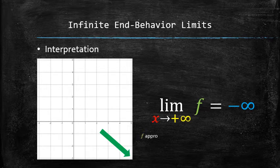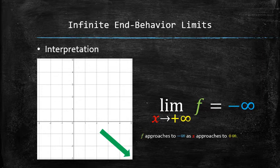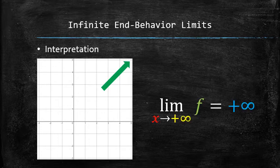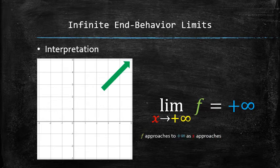For instance, this is what one would imagine when seeing the following limit statement. It shows that f approaches negative infinity as x approaches positive infinity. And for this limit statement, it shows that f approaches positive infinity as x approaches positive infinity.